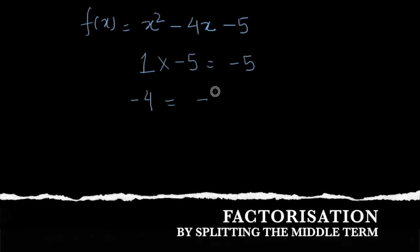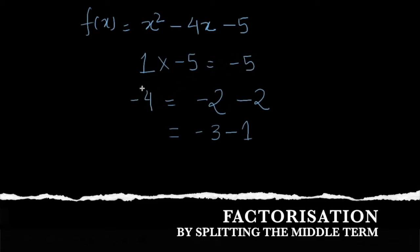We can try splitting -4 into -2 and -2, but their multiplication equals +4, which is not equal to -5. We can try -3 and -1, but their multiplication is again +4. Since the product is negative, we need one positive and one negative part. One possible way is -5 and +1, and if we multiply these two we get -5, which works.